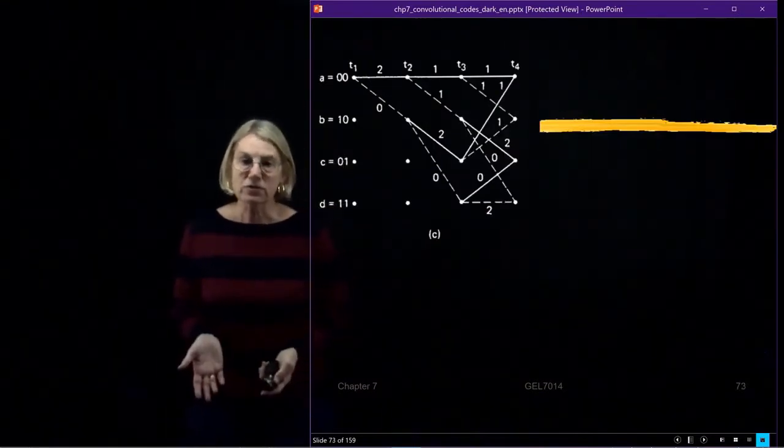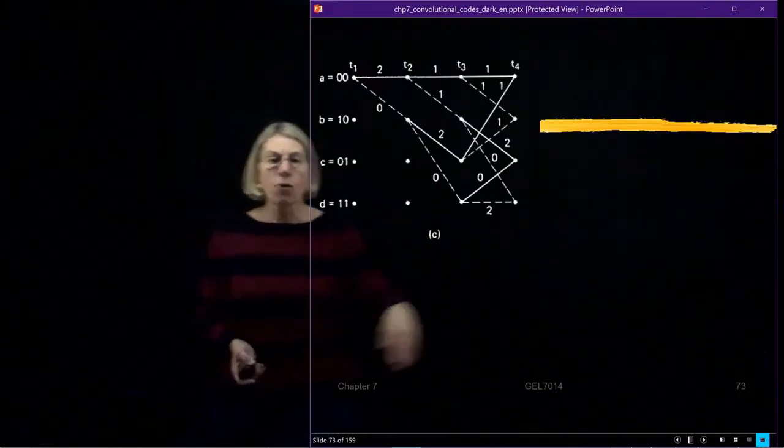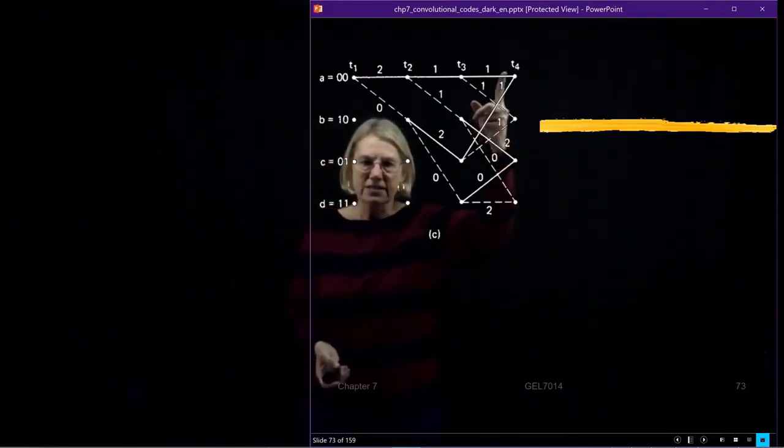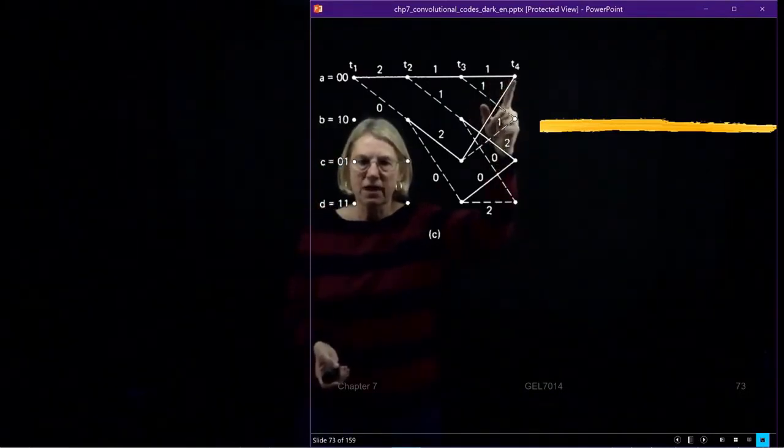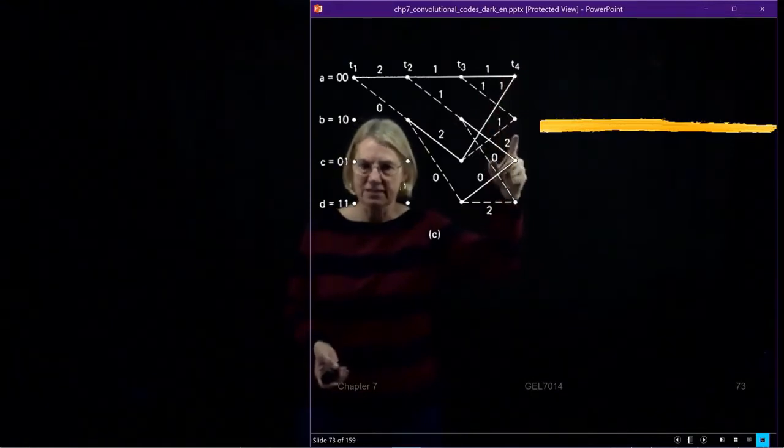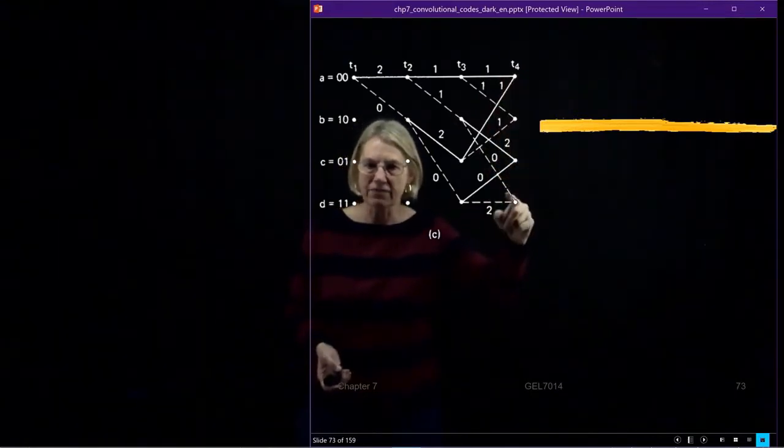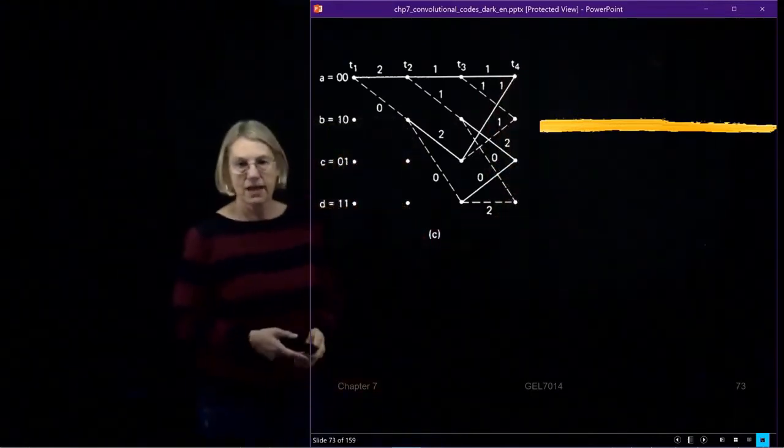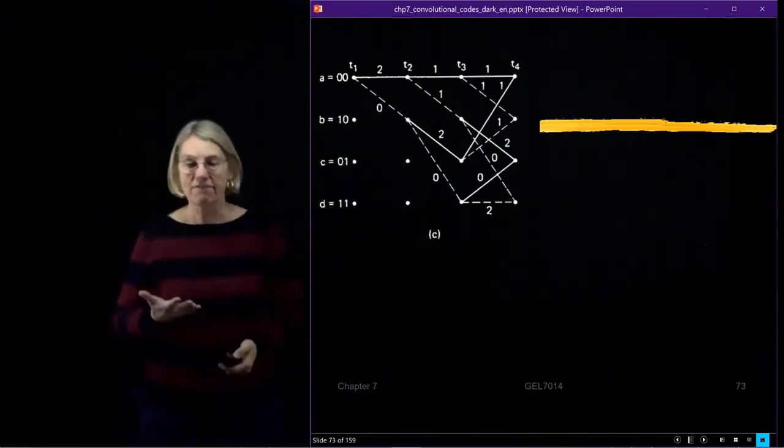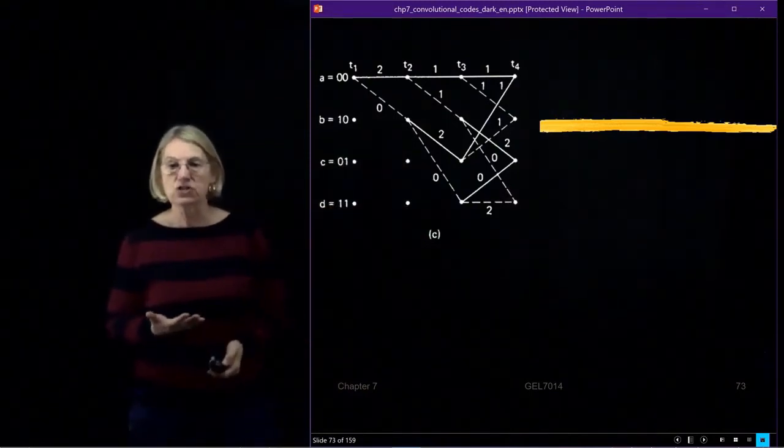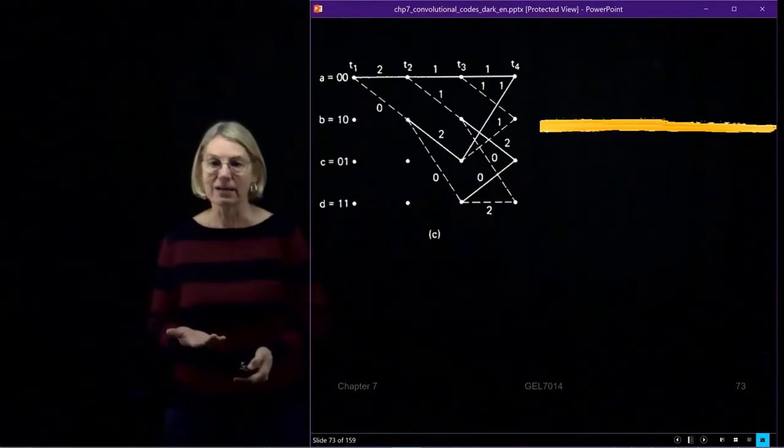Now I get to where things start getting interesting, because now when I get to time 4, I've got two paths coming into each one of the states. So I'm going to have two candidate paths on each one of the states. And so I'm going to have to do this evaluation of the path metric to choose what is the surviving path.